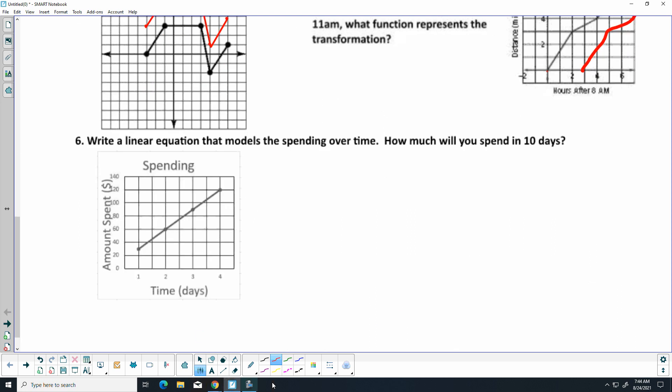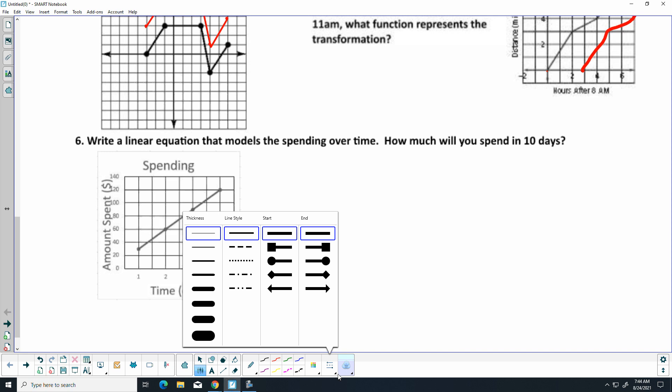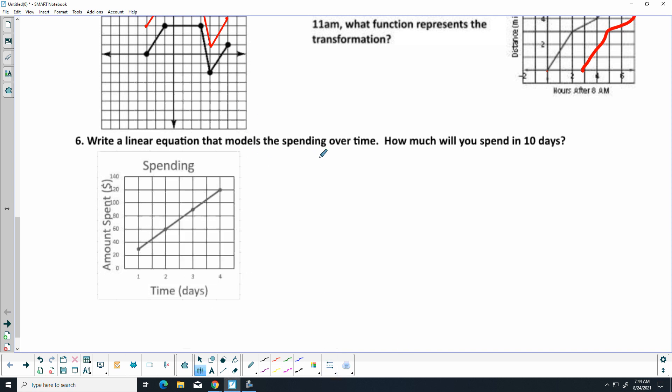All right, now we get to model a linear equation. How much will you spend in 10 days? Well, let's come up with an equation. So, I am going to use the ordered pair right here of 2, 60, and right there, 4, 120. First thing I need to do is come up with the slope. My slope is going to be the difference of my y's over the difference of my x's. So, I'm going to get 60 over 2, which is 30.